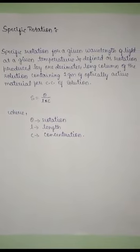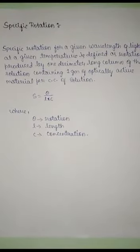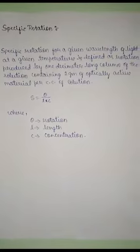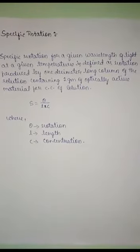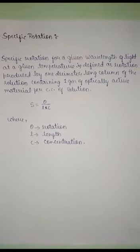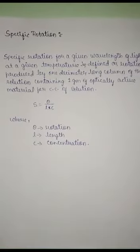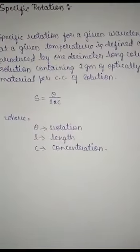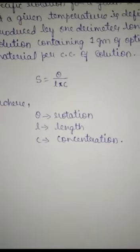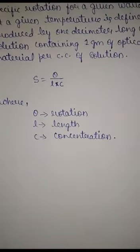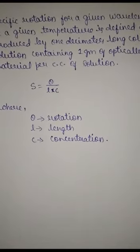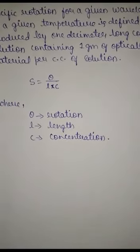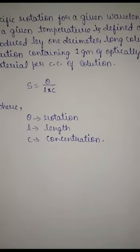For a given wavelength of light at a given temperature, specific rotation is defined using the formula involving θ — the angle of rotation, L — the length of the glass tube, and C — the concentration of the solution. Thank you.